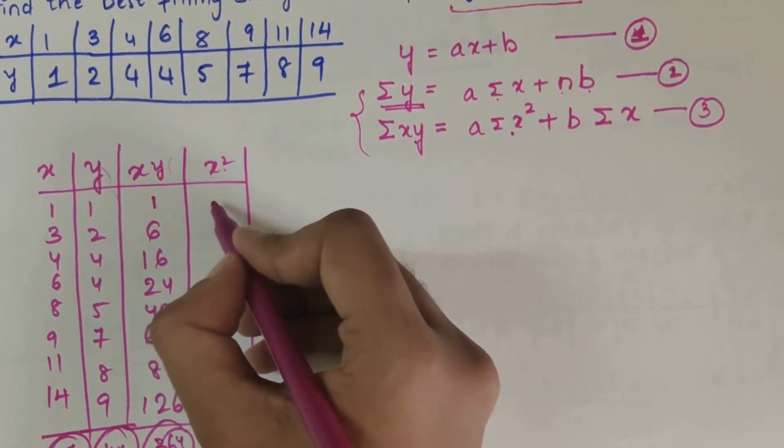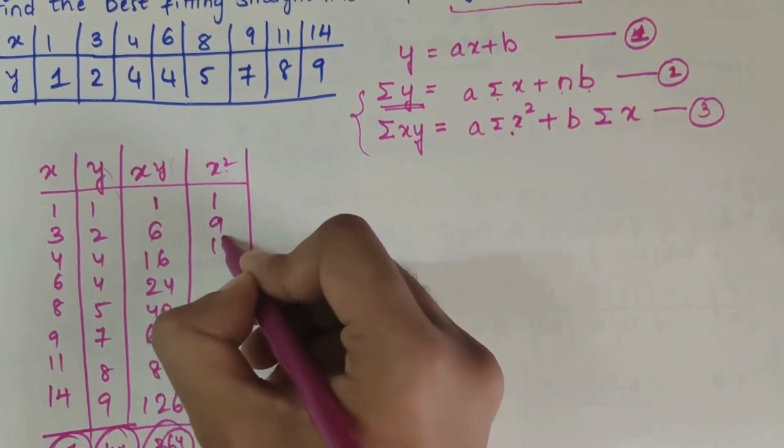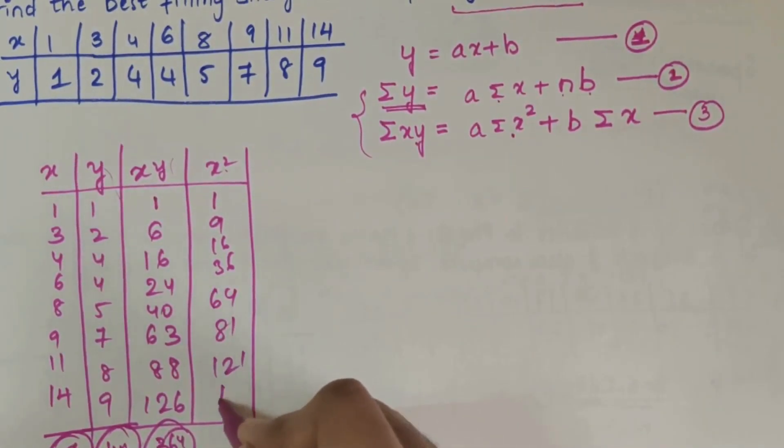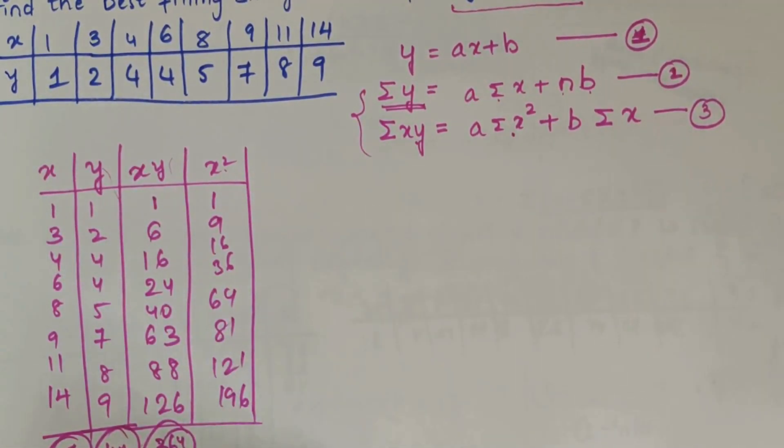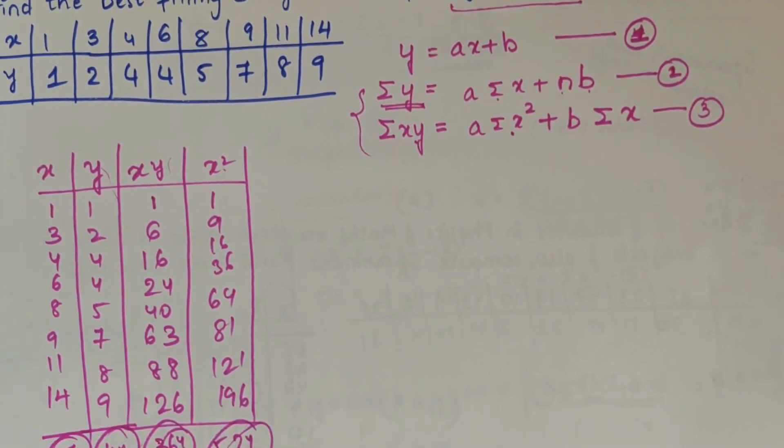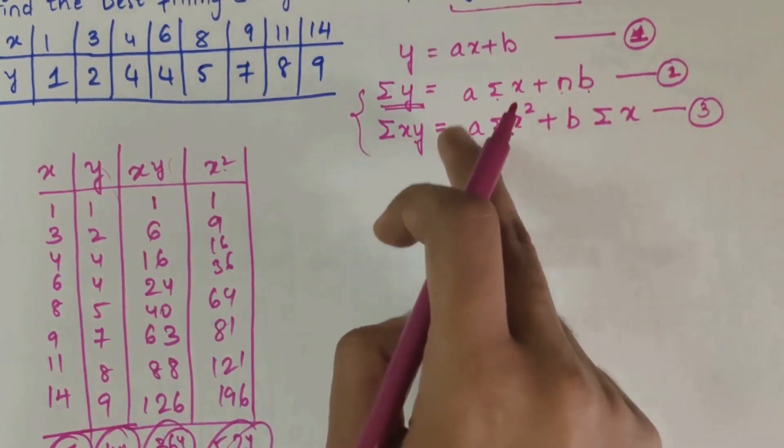Next x square: 1, 9, 16, 36, 64, 81, 121, and 196. If you add all this you will get 524. So you have found out all the values required to solve these two equations. Now substitute the values.